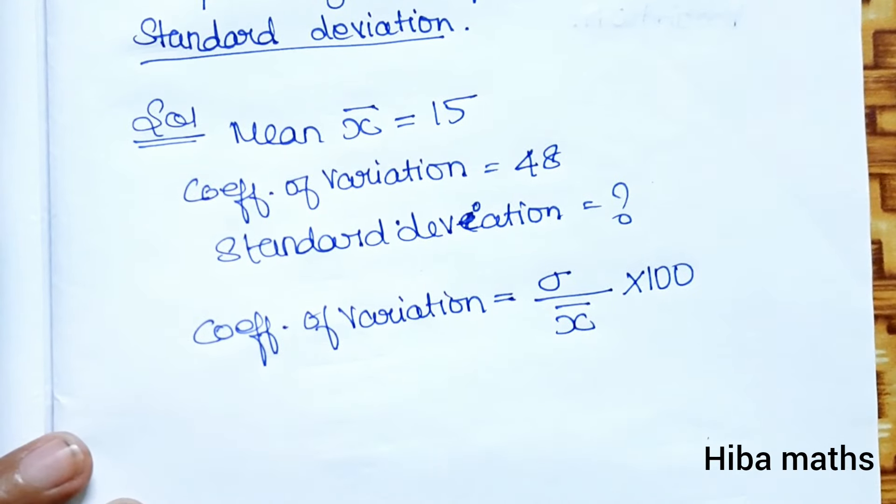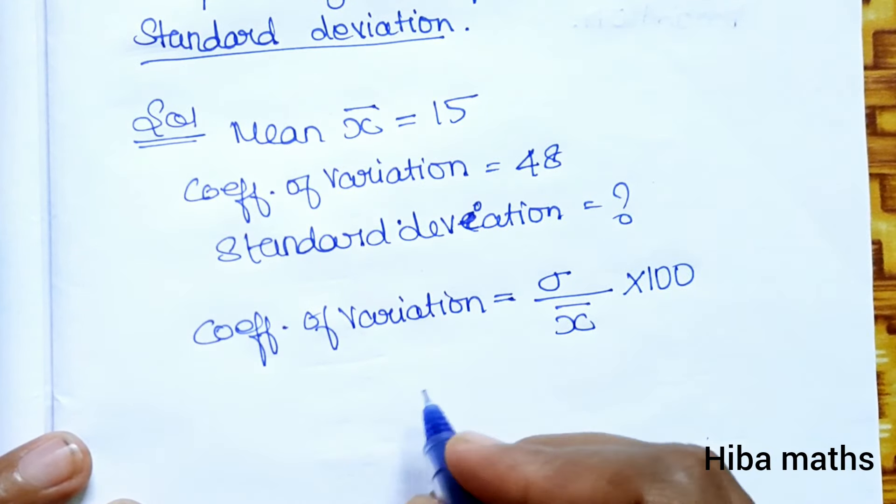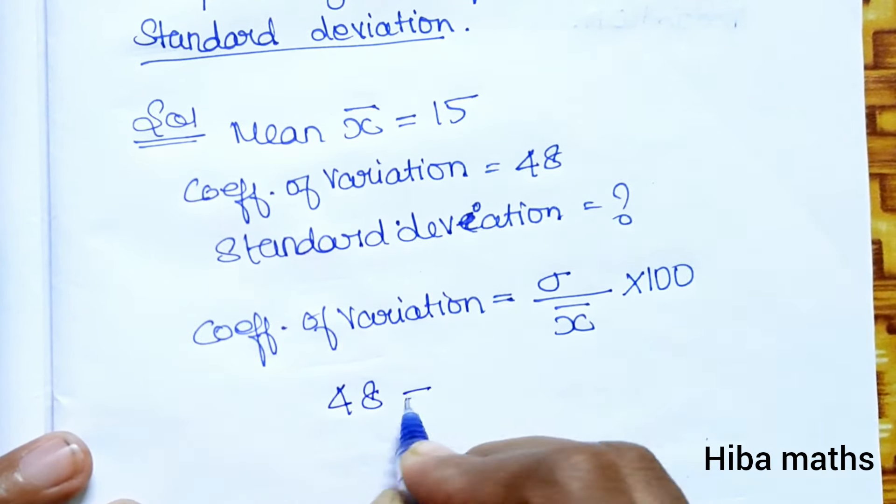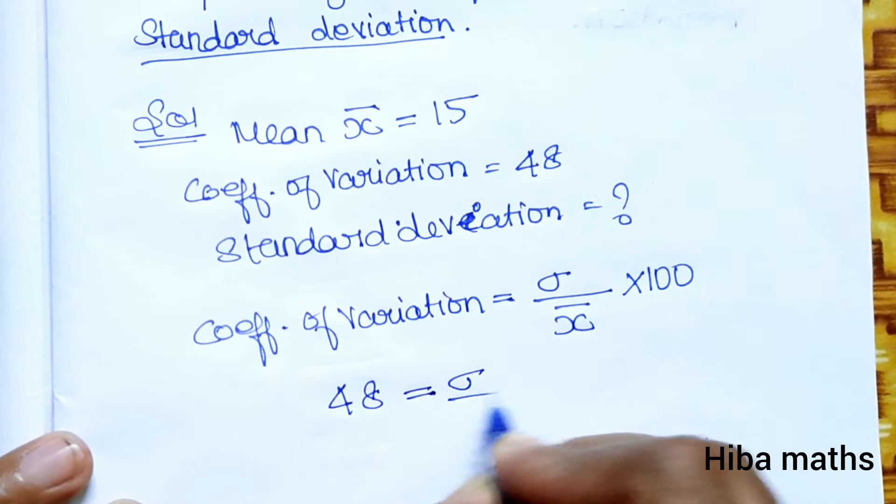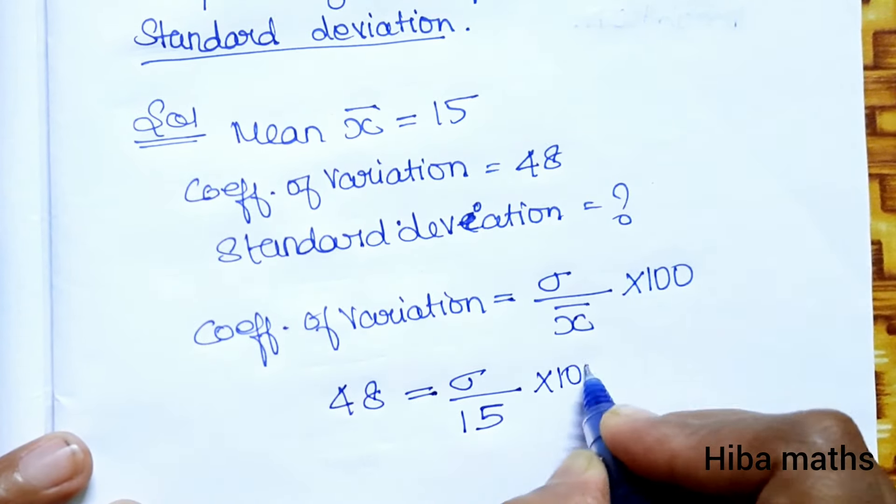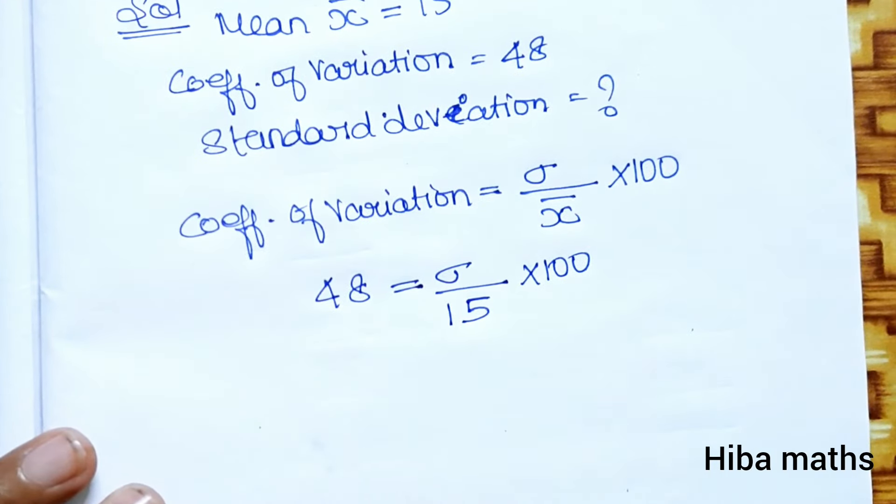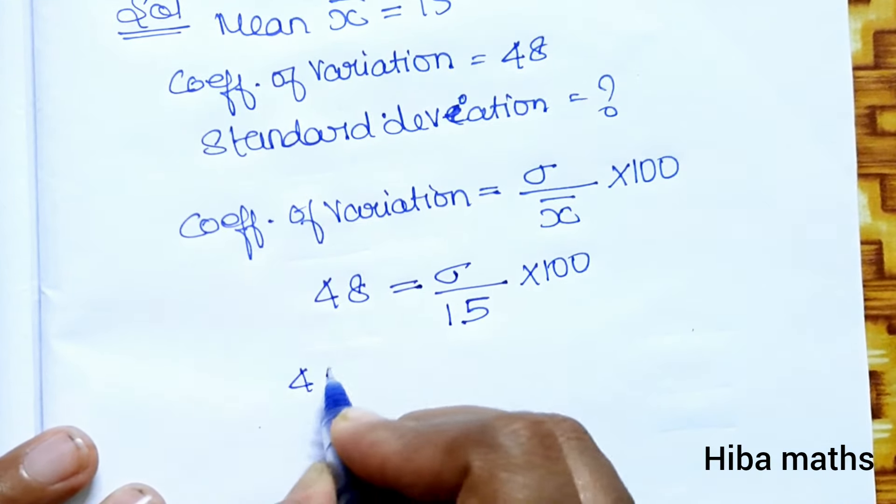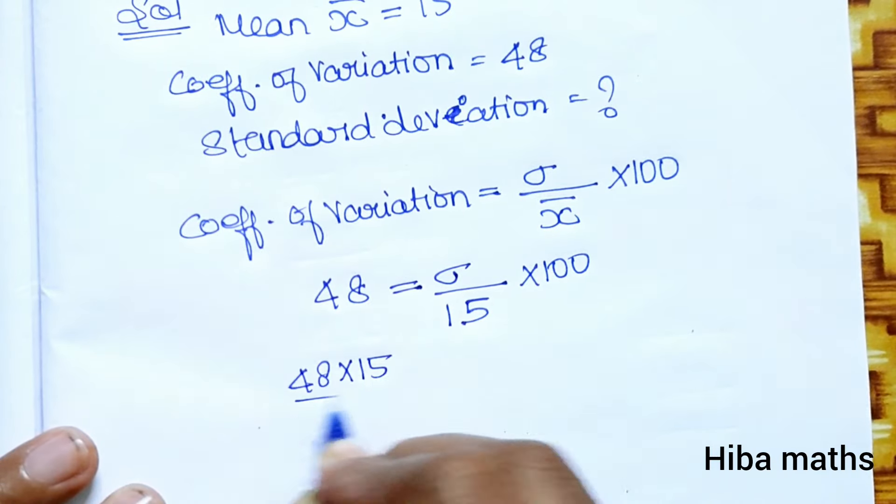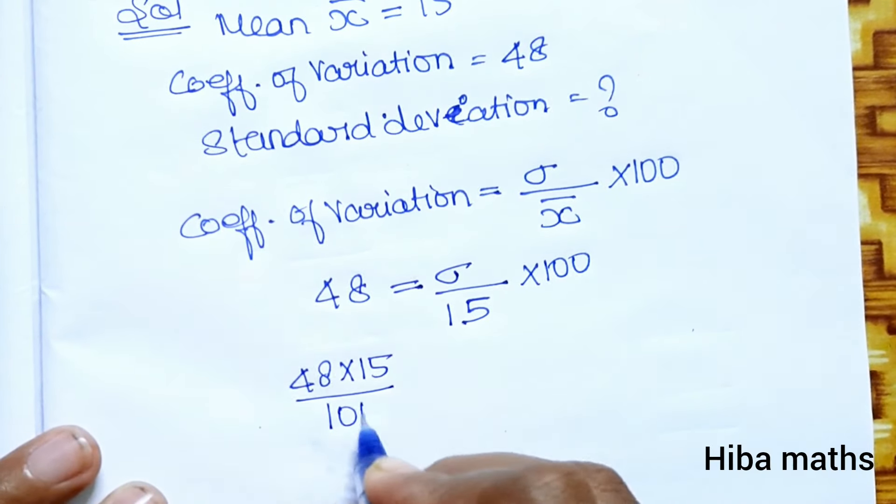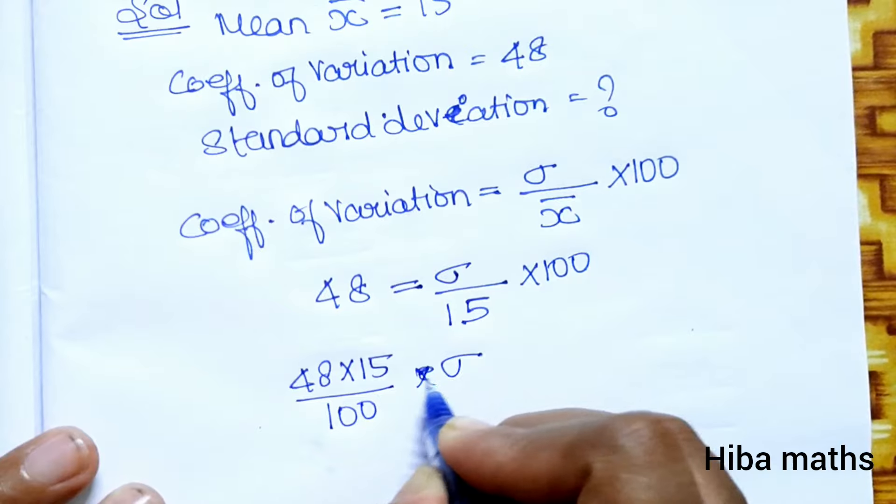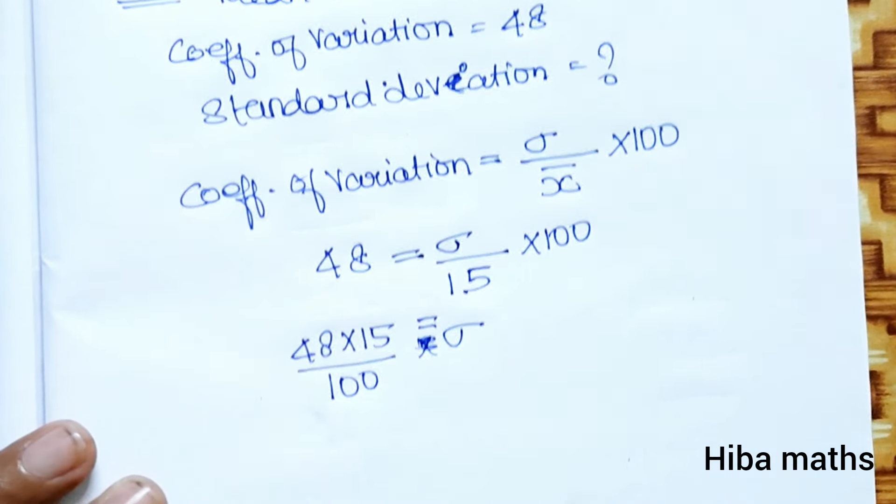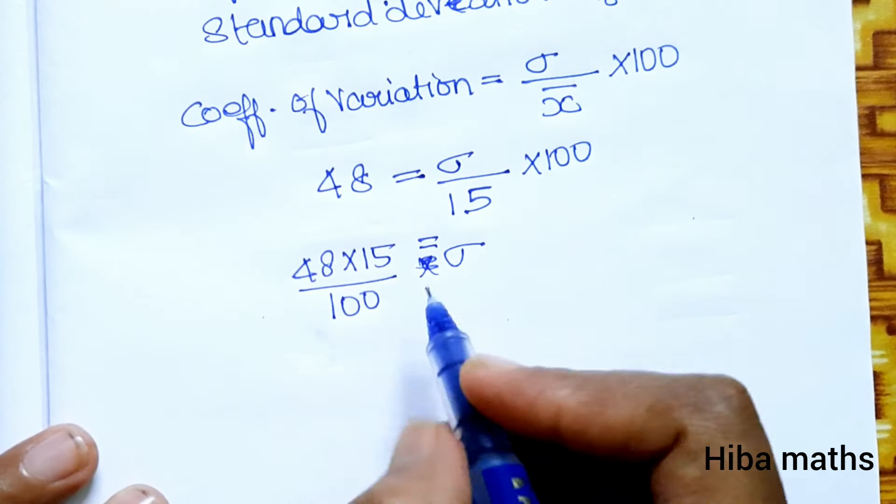Now we will substitute the values. 48 = (σ / 15) × 100. Now what do we do? Standard deviation equals: we bring 15 to the numerator, 100 to the denominator.